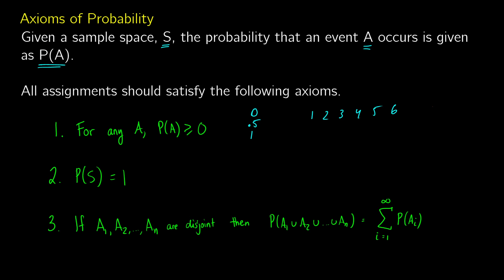The second axiom says that if you look at the entire sample space, the probability of some event in the sample space occurring should be one. So when we add up all of our disjoint events that cover the entire sample space, we get one. For instance, the probability of A occurring or not A occurring should equal one.